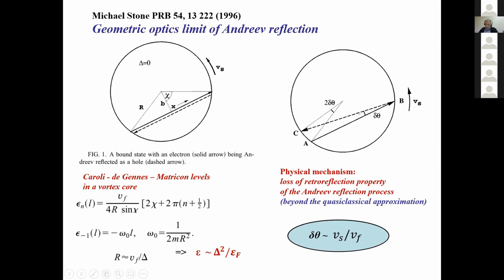In the quasi-classical regime, we usually consider Andreev reflection as fully retroreflection - the hole traces back exactly the same trajectory as an electron. But if you take into account the superfluid velocity, it's kind of Doppler shift. One can identify there is a certain angle - a mismatch between electron and hole trajectories proportional to superfluid velocity over E_Fermi, which is exactly delta over E_Fermi. If you take typical fermi velocity, we have this small parameter. Michael Stone showed that using this argument, one can reproduce the states in the vortex core.